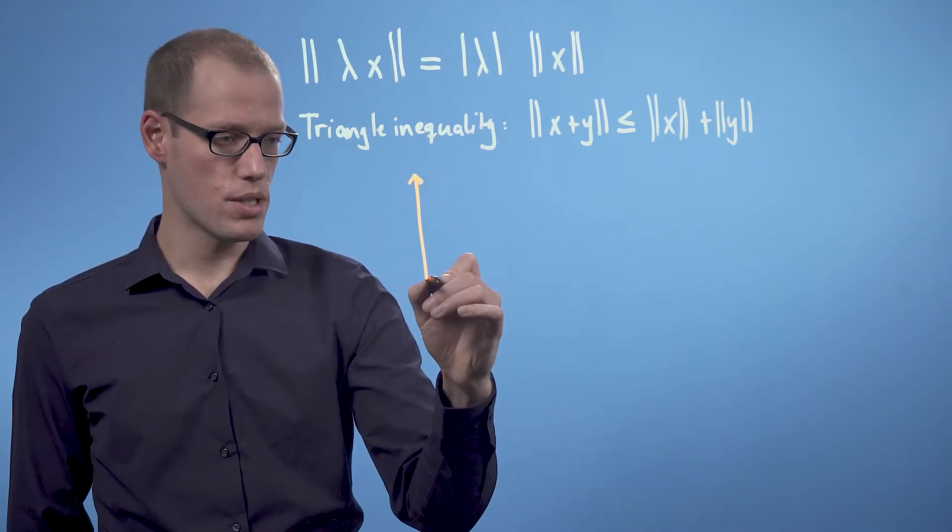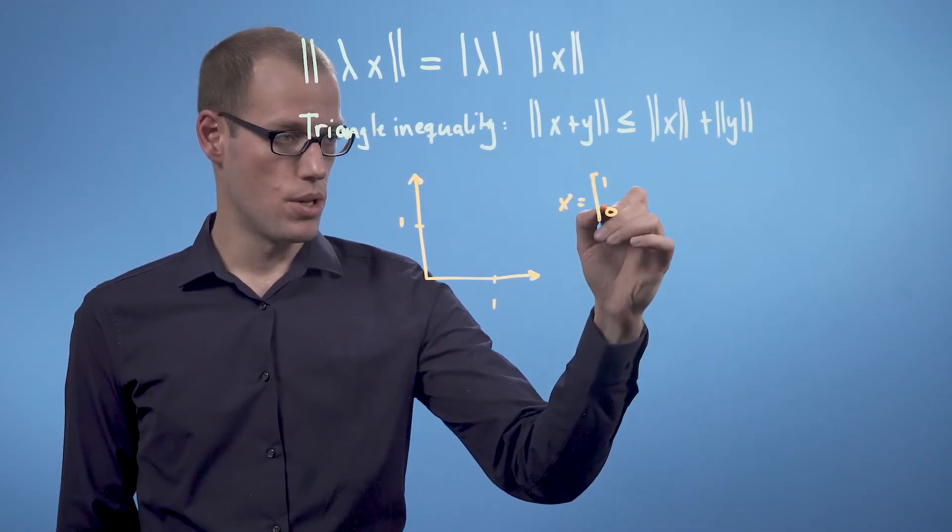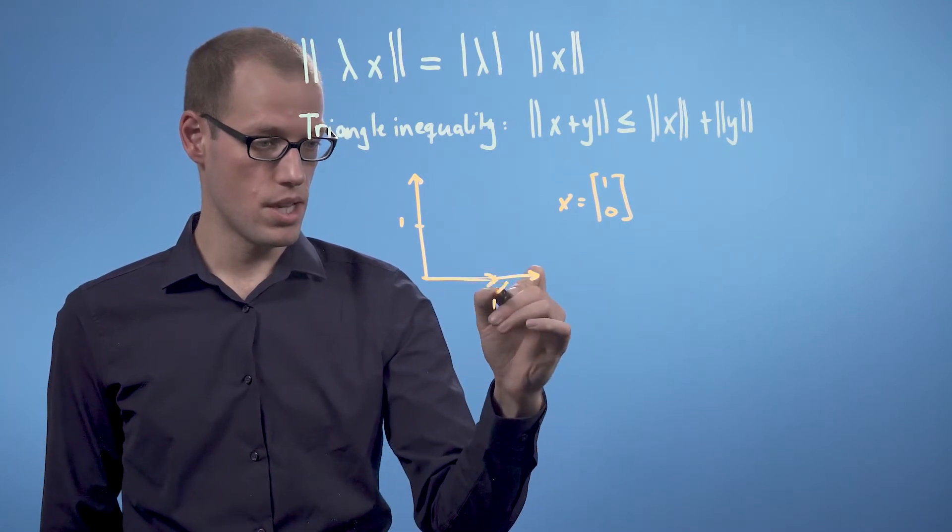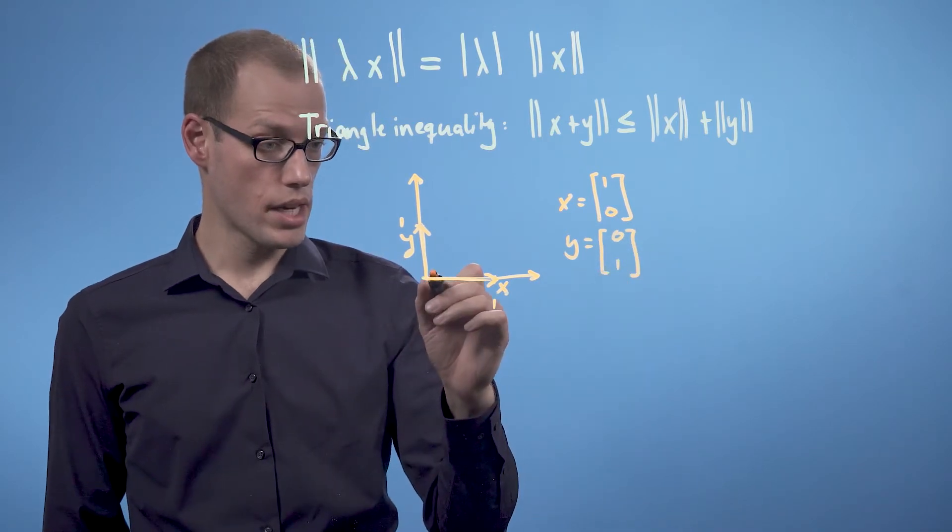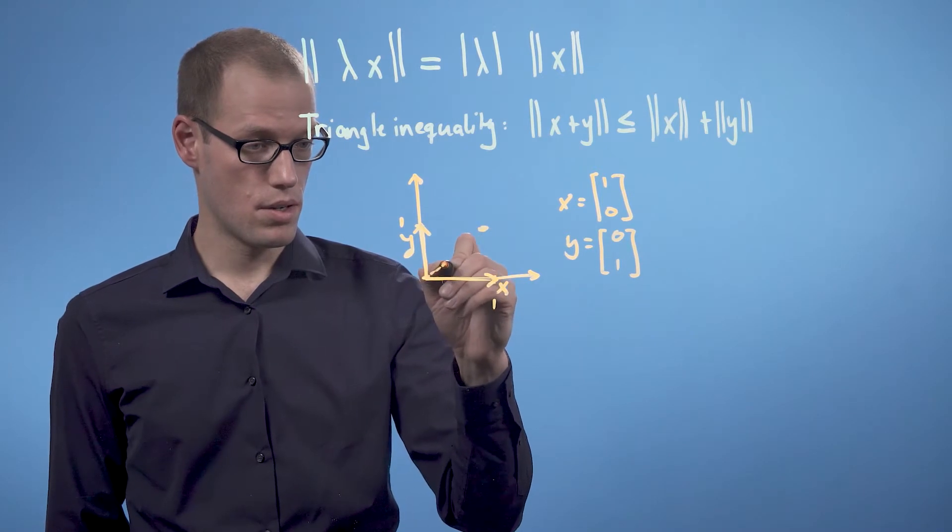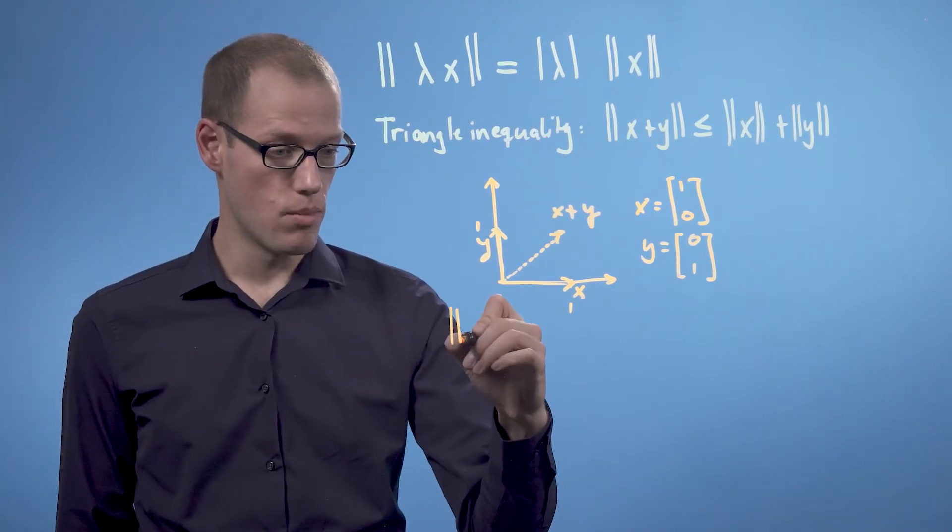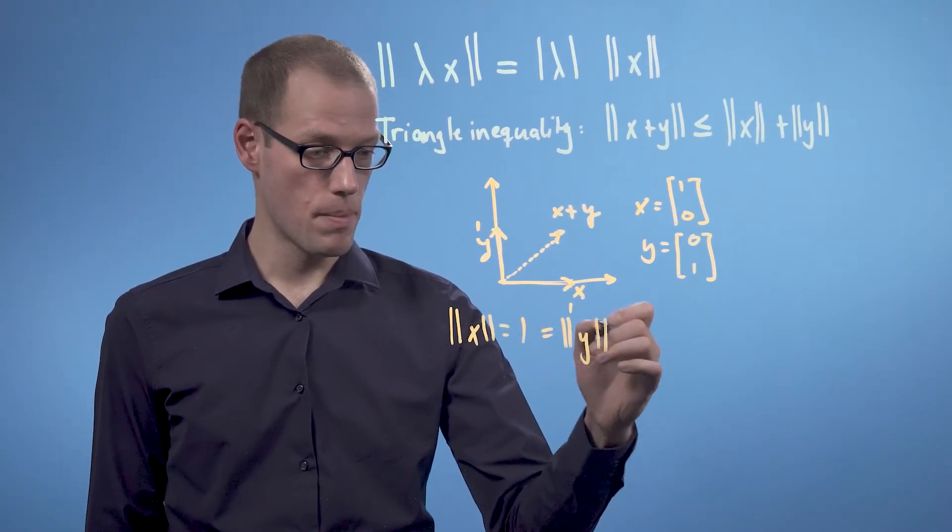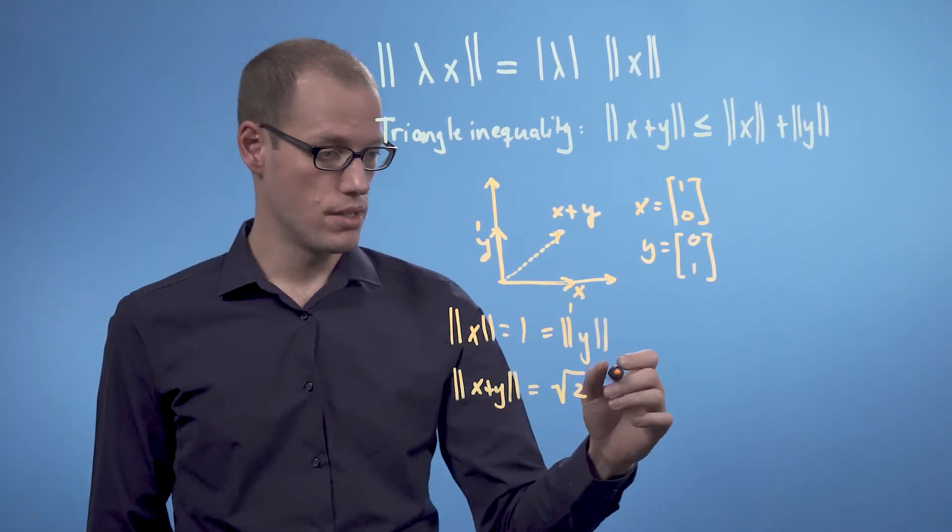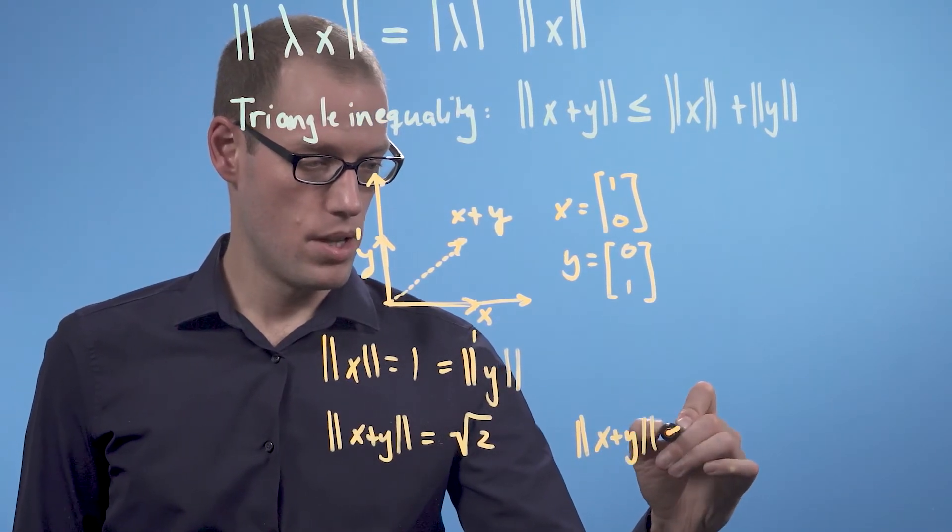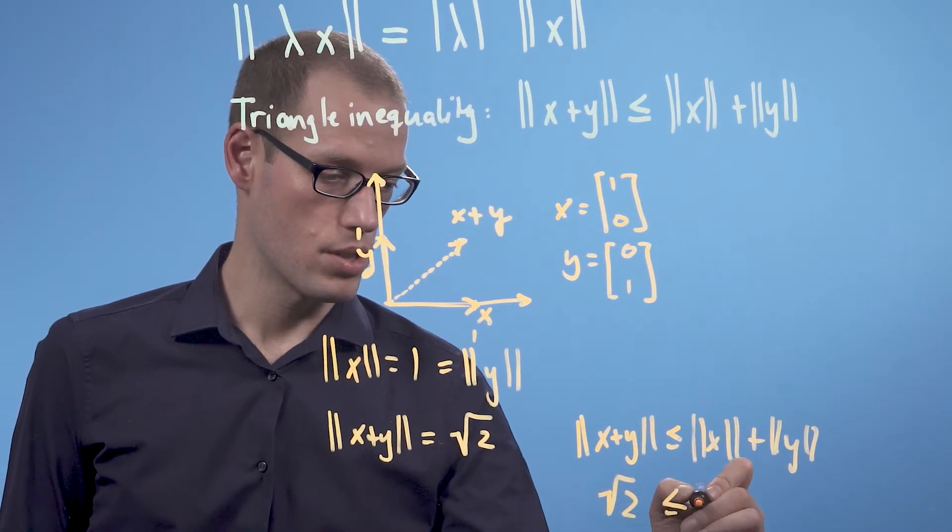So let's assume we have our coordinate system in two dimensions, and we use the standard vectors x = [1, 0]. So x would be sitting exactly here. If we use the dot product as our inner product, then the norm of x is 1, which is the same as the norm of y. And the norm of x + y is √2. So what the triangle inequality says is that ||x + y|| is smaller or equal than ||x|| + ||y||. And that is also true in our case because √2 is smaller or equal than 2.